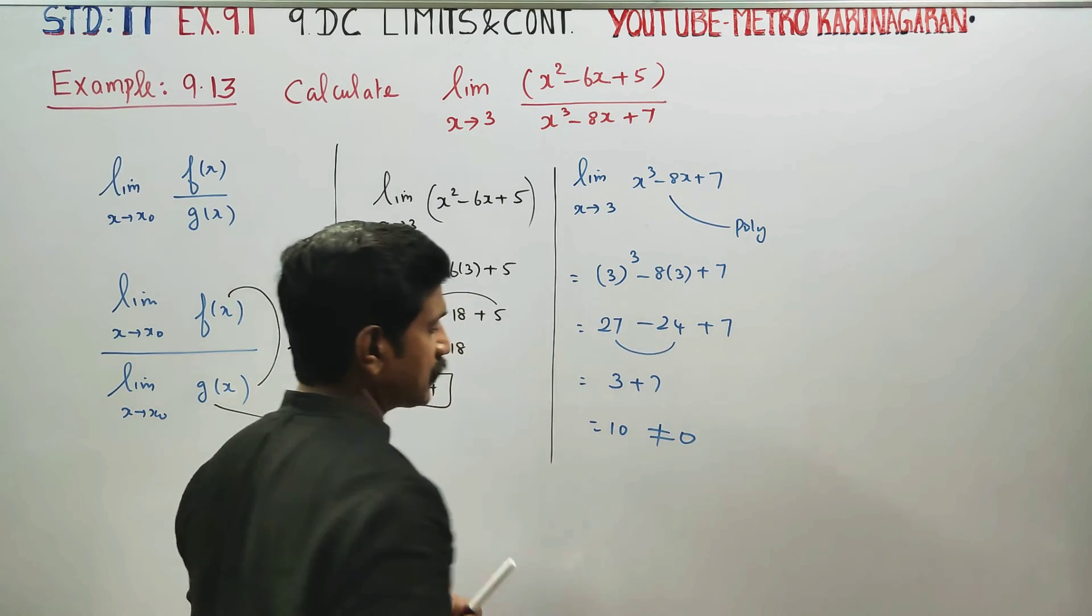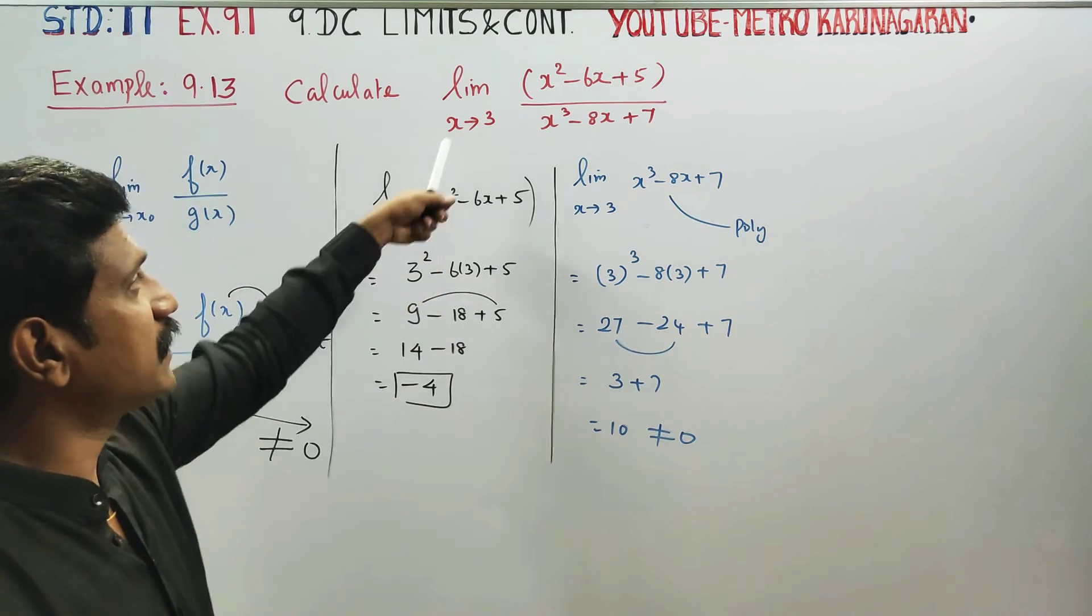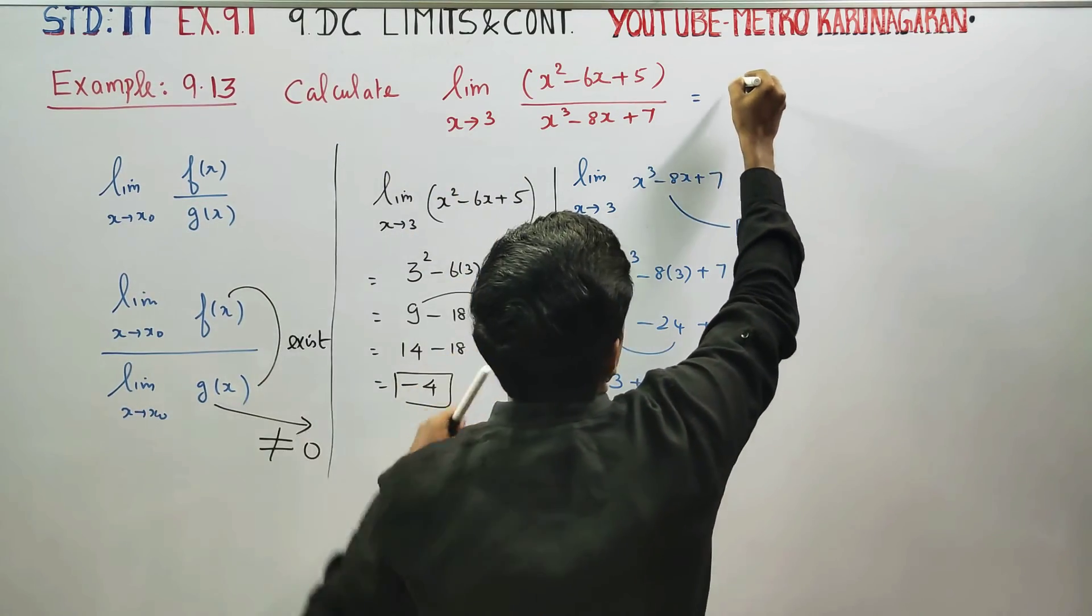This is not equal to zero, so the limit exists. That is why you'll be getting the answer. How do you get it?